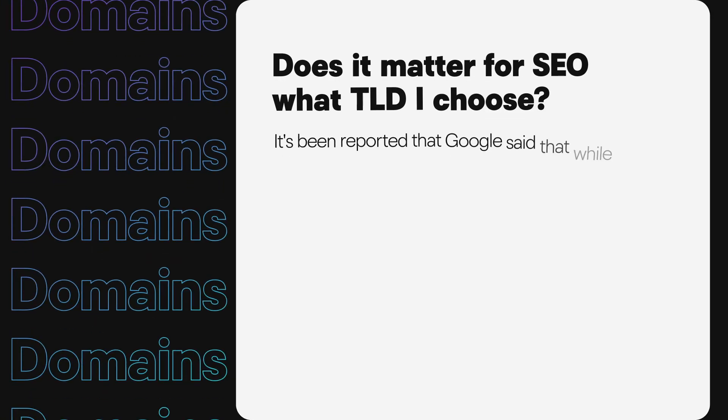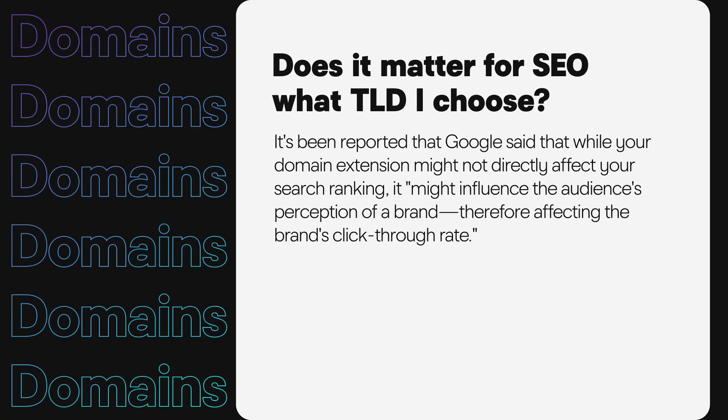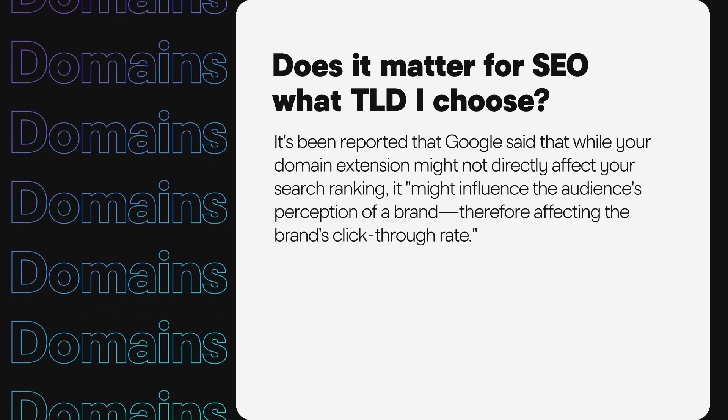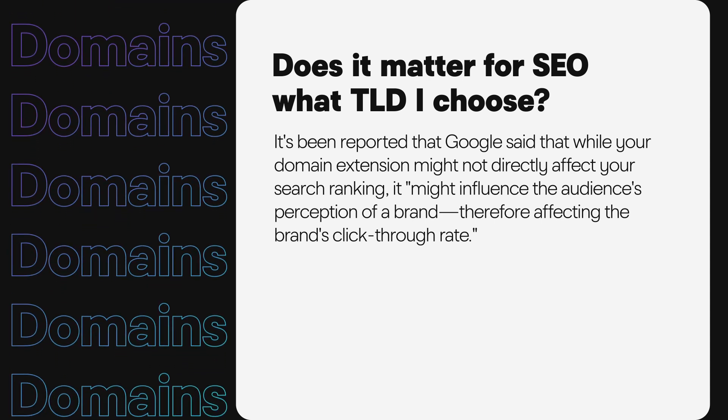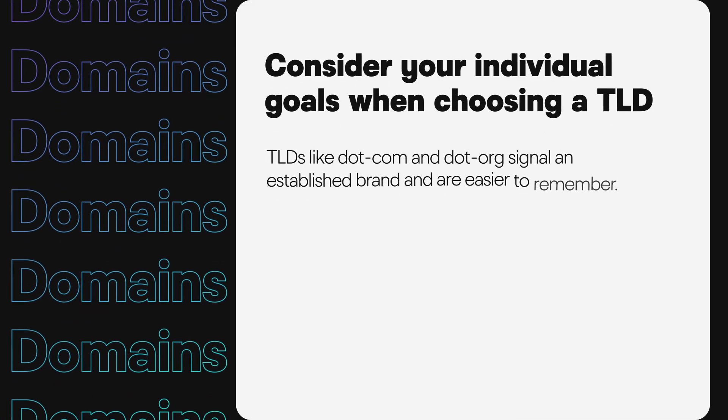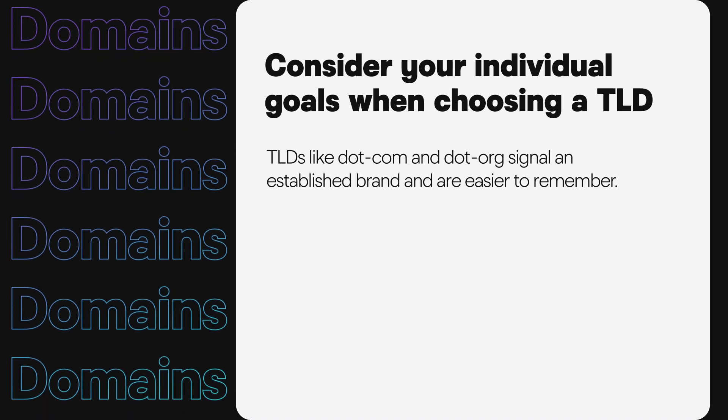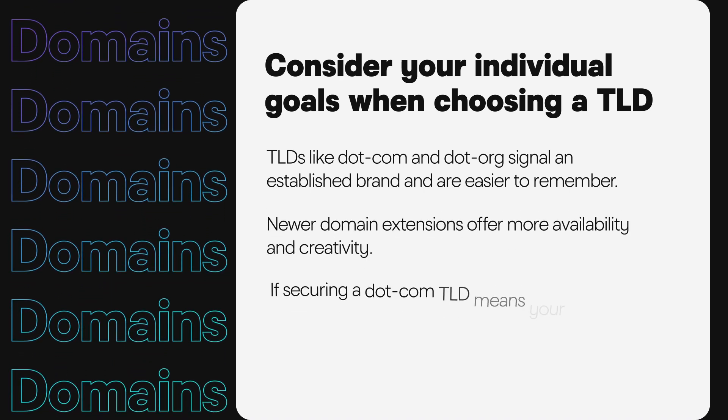The new .site has become an excellent alternative to .com as a generic domain extension and is rising in popularity. Does it matter for SEO what TLD you choose? It's been reported that Google said that while your domain extension might not directly affect your search ranking, it might influence the audience's perception of a brand, therefore affecting the brand's click-through rate. The best advice might be to consider your individual goals when choosing a TLD. TLDs like .com and .org signal an established brand and are easier to remember, while newer domain extensions offer more availability and creativity.